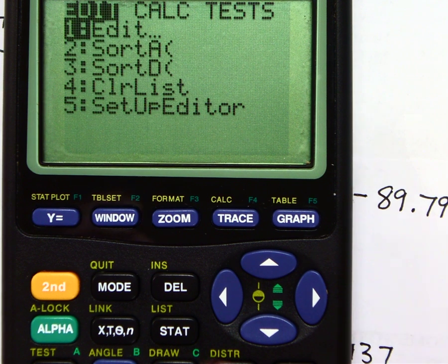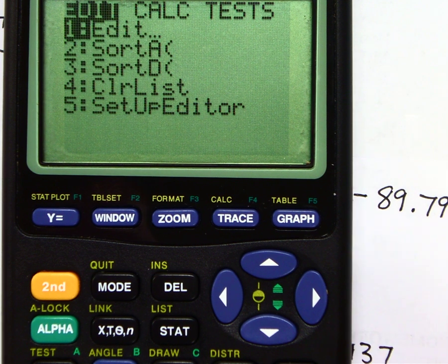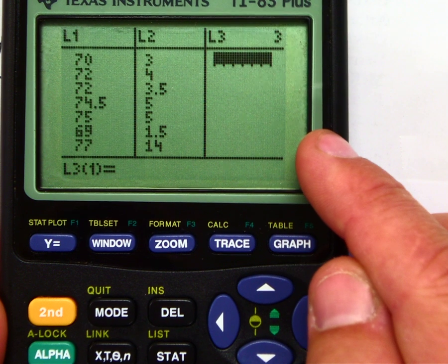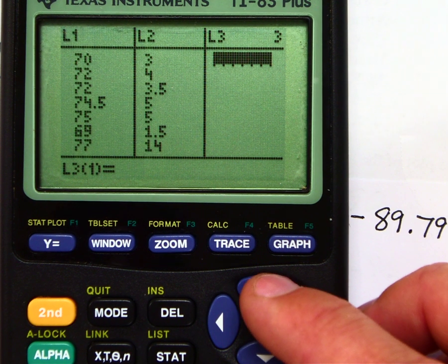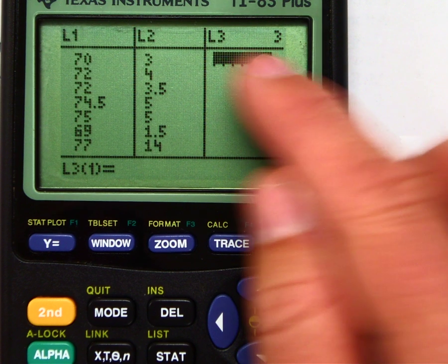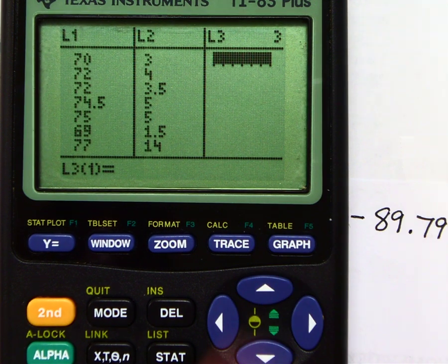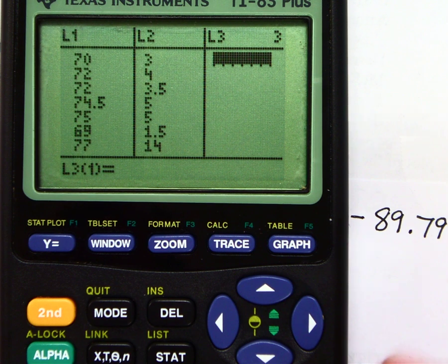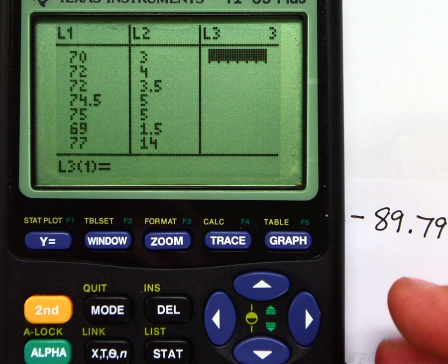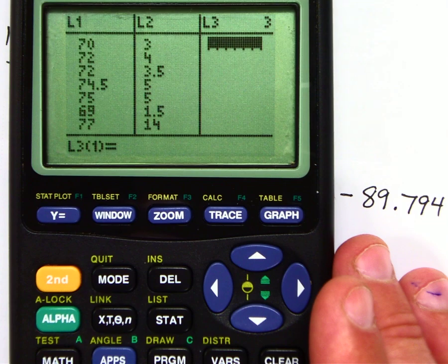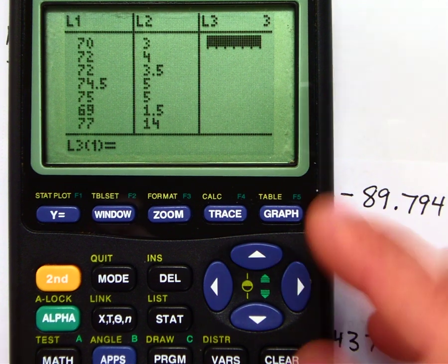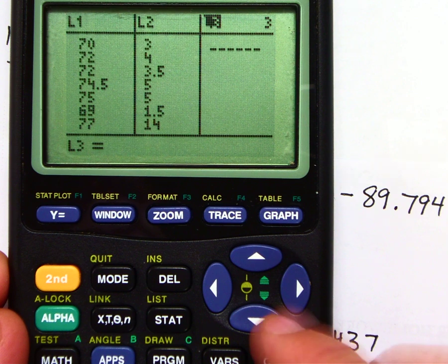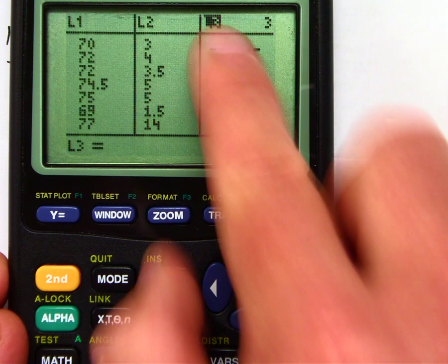So what I'm going to do is I'm going to show you how to find the residuals in a list here. And then we're going to take that list and we're going to graph it. There is a program that you may have called Resid, which you can define this list as Resid, and it will, with one push of a button, calculate all the residuals. However, I do not like to do it that way for many reasons, which I don't want to share now. So I'm simply going to highlight list 3.